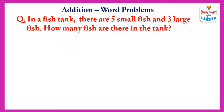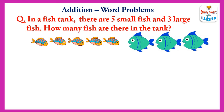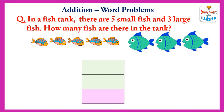Another problem. In a fish tank there are five small fish and three large fish. How many fish are there in the tank? In order to find the total number of fish in the tank, we will add them. Five plus three equals eight. So there are eight fish in the tank.